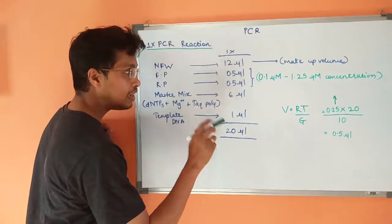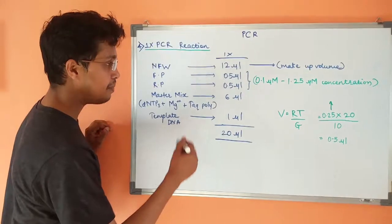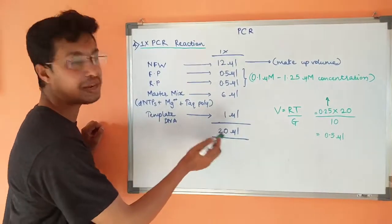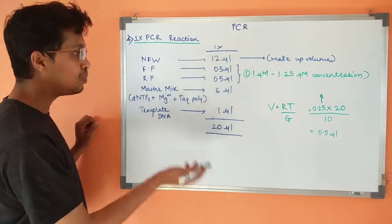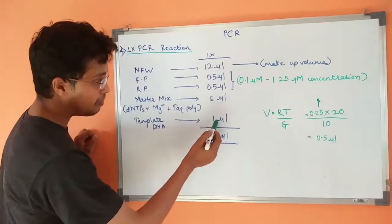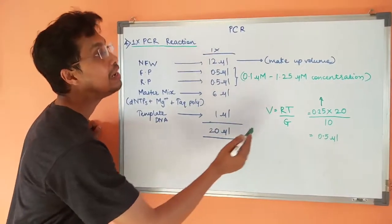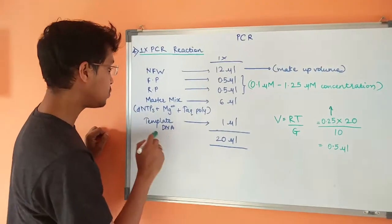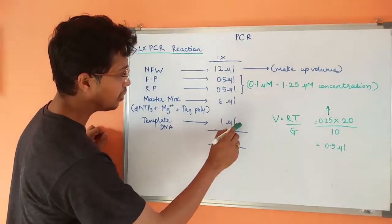Master mix, it is prescribed in that particular kit which I am having, that I should add 6 µL of volume for a 20 µL reaction, which is already given to me. I cannot change that. Then template DNA, I can add 1 µL depending on it comprising a concentration of 50 to 250 ng. I am going to add 1 µL.